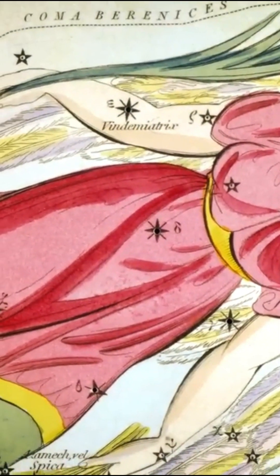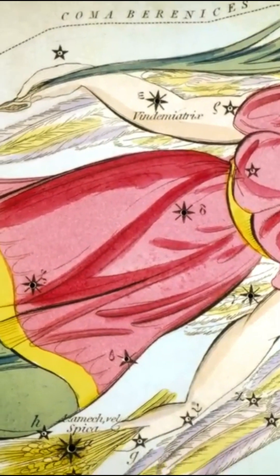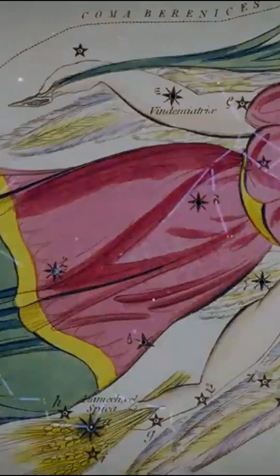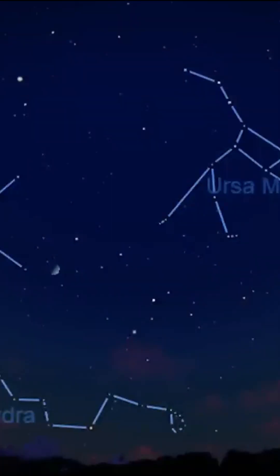The constellation Virgo is the most extensive of the Zodiac's constellations. It's also the second largest constellation in the sky, after the Hydra.